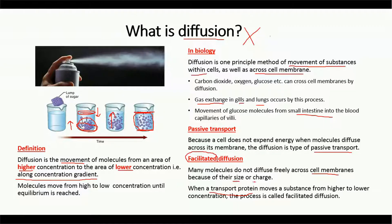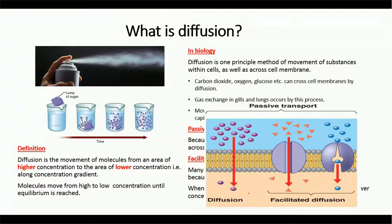Many molecules cannot diffuse across the cell membrane because of their size or the charge on them. So the transport proteins present in the cell membrane help in the movement of these molecules from higher concentration to lower concentration. Here in this diagram you can see simple diffusion taking place through the cell membrane.